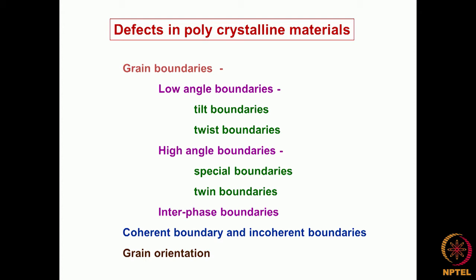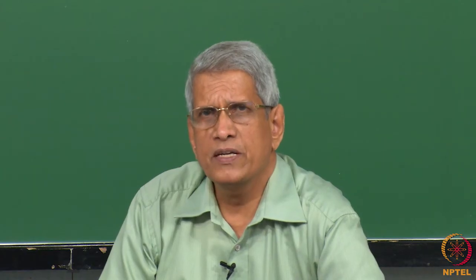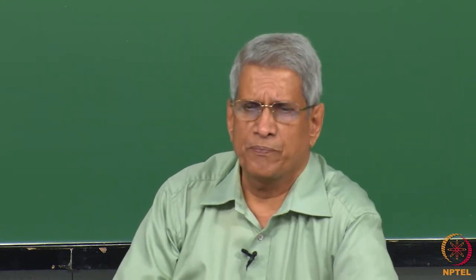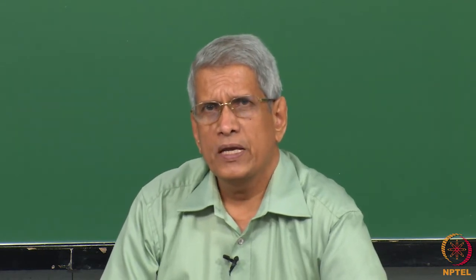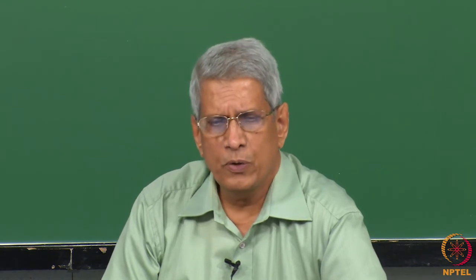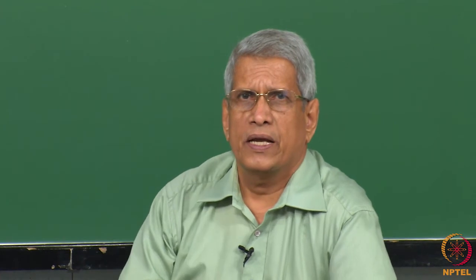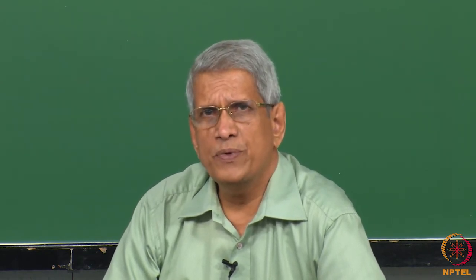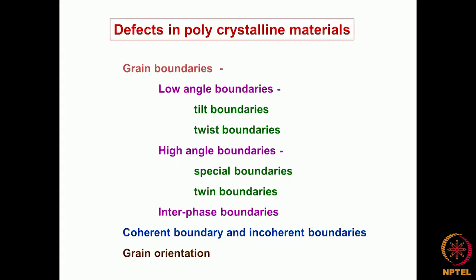From defects in polycrystalline materials — most of the materials which we use in service are all polycrystalline materials, not single crystals. So in a polycrystalline material, what is the difference between a single crystal and a polycrystalline material? A polycrystalline material is nothing but different single crystals oriented in different directions, joined together by interfaces which we call grain boundaries. These grain boundaries could be either low angle boundaries or high angle boundaries. For low angle boundaries there are sub-classifications: tilt boundaries and twist boundaries. For high angle boundaries we consider special boundaries, twin boundaries, and if different phases are present the interfaces between them also generate boundaries, called interphase boundaries. Some twin boundaries could be coherent or incoherent. These are all the types of defects which we have to consider.